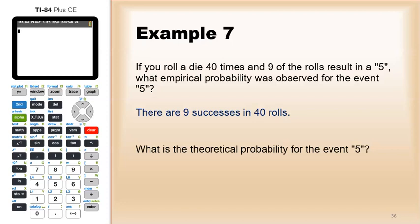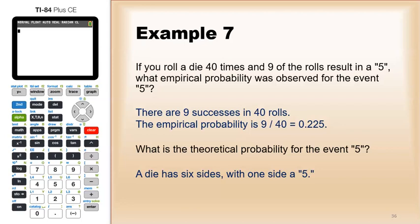What is the theoretical probability for the event '5'? A die has six sides, with one side being a 5, so the theoretical probability is 1/6, which equals 0.167. You'll notice a lot of times empirical and theoretical probabilities are not going to be exact, but depending on the sample size they'll often be pretty close.